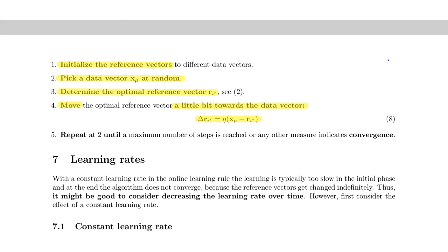If we have a data point here and a reference vector here, then the difference vector between the reference and x would point from the reference vector to the data point. Depending on eta, the reference vector will be moved along this line towards the data point. If we assume eta is 0.2, then the new position of the reference vector might be somewhere here.